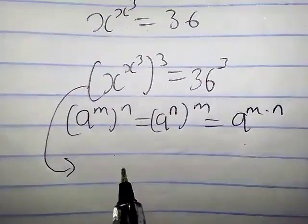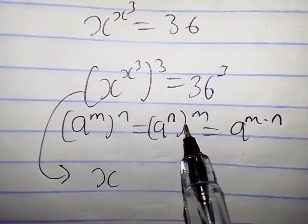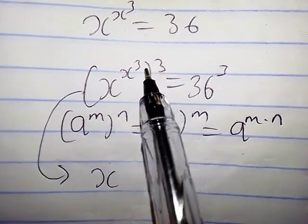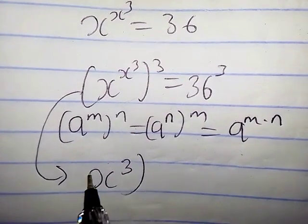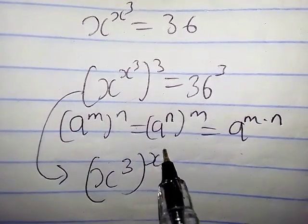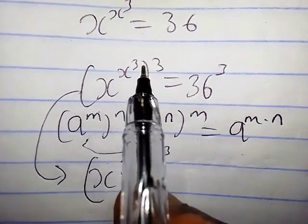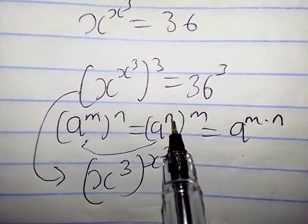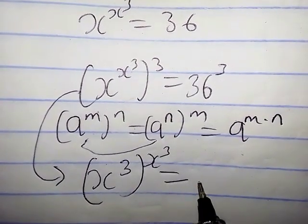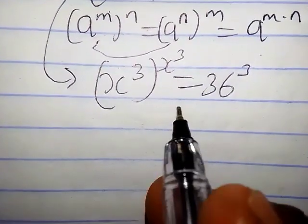This implies that this becomes x. Using this property, we are going to switch and take this one out, so we have 3 into brackets s cube. It's actually similar to this property. Our m here is s cube and n is 3, so we just switch. This equals 36 cube.